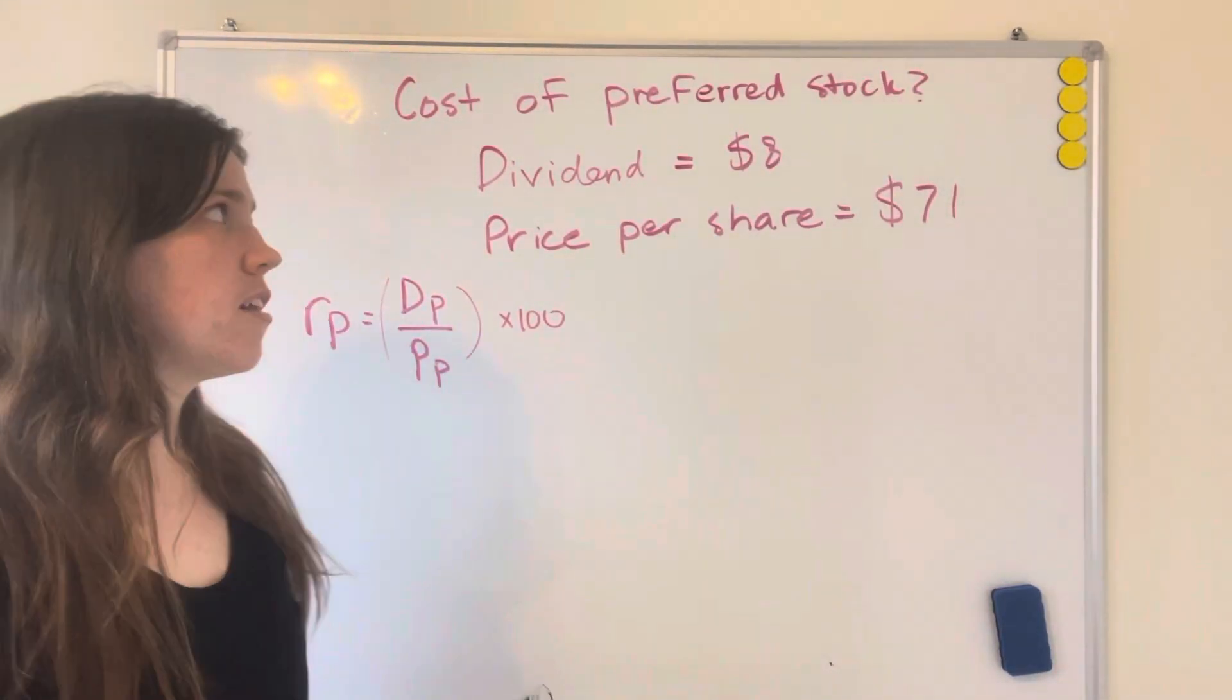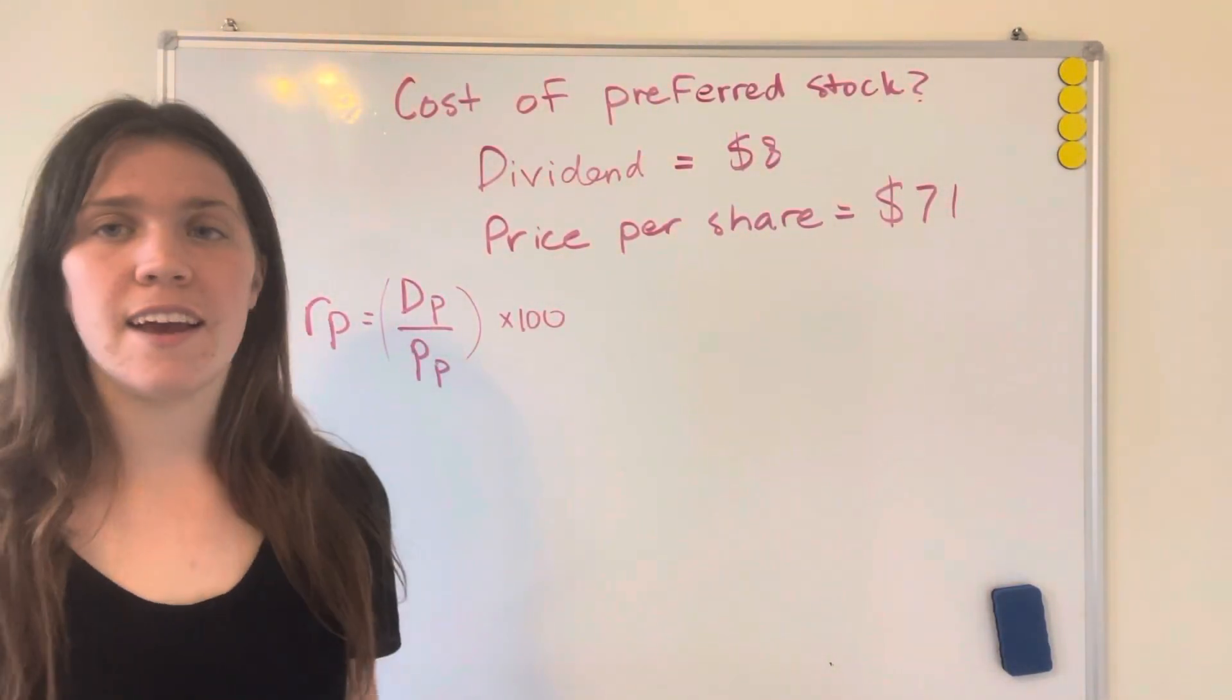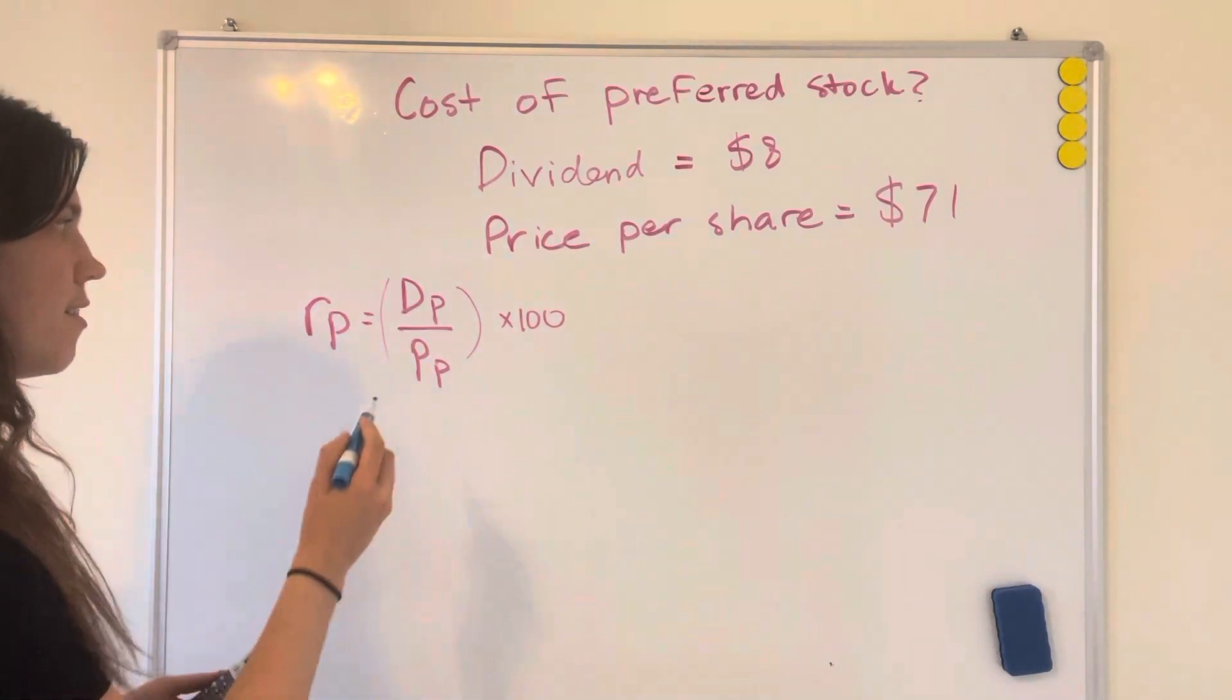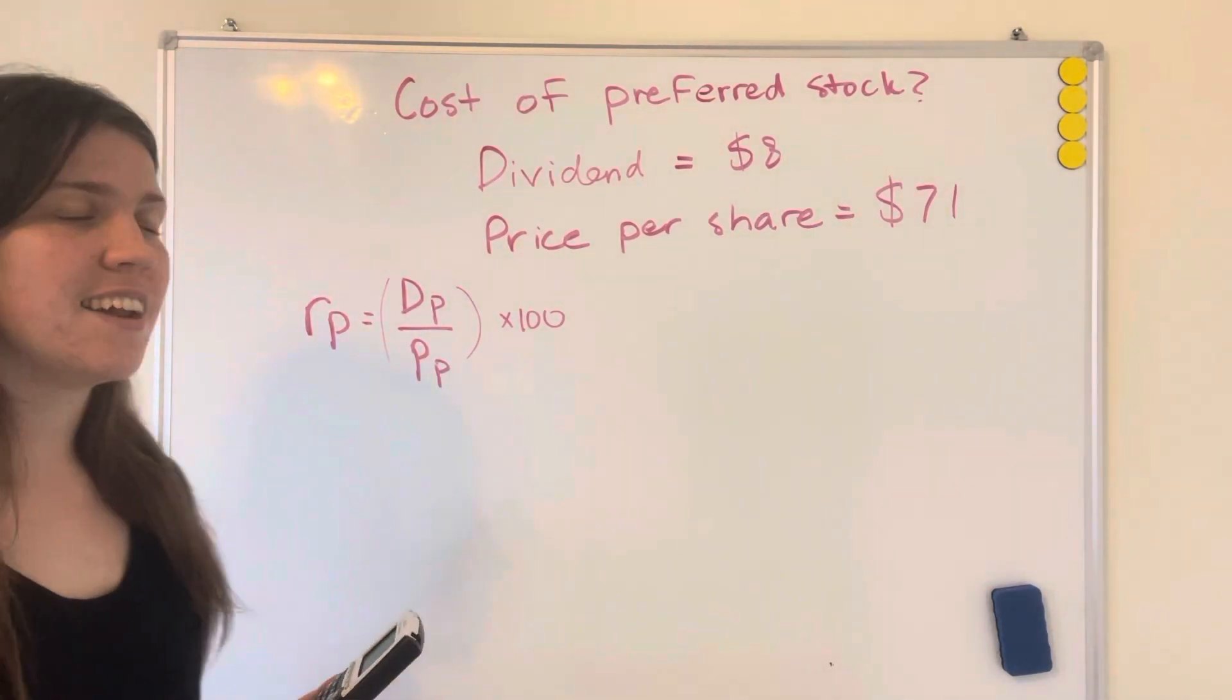This is how to find the cost of preferred stock when you only know your dividend and your price per share. This is the formula we're going to use, and it's super simple.